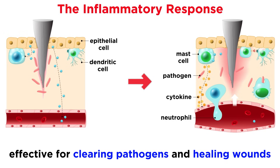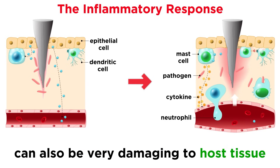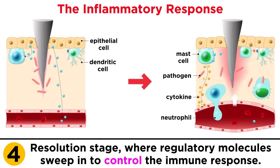The acute inflammatory response is an effective way to limit microbial spread and promote wound healing, but it's extremely powerful and isn't meant to be switched on for too long. Although many antimicrobial mechanisms are specially designed to only target pathogens, several can cause collateral damage to host tissue. Typically, following an acute inflammatory response, there should be a resolution stage where a new suite of regulatory molecules sweeps in to control the immune response. More recent research has shown that resolution is an active process that uses several distinct mechanisms and mediators to decrease inflammation and promote wound healing.